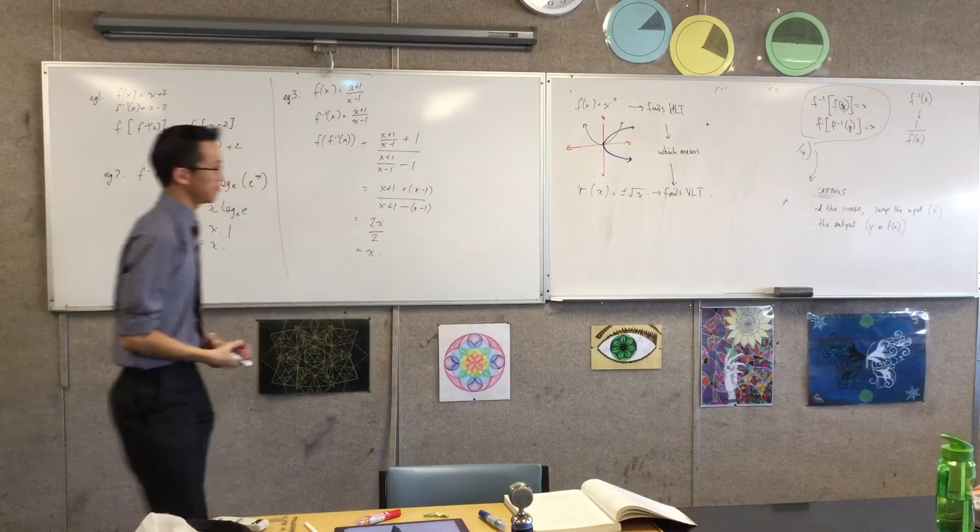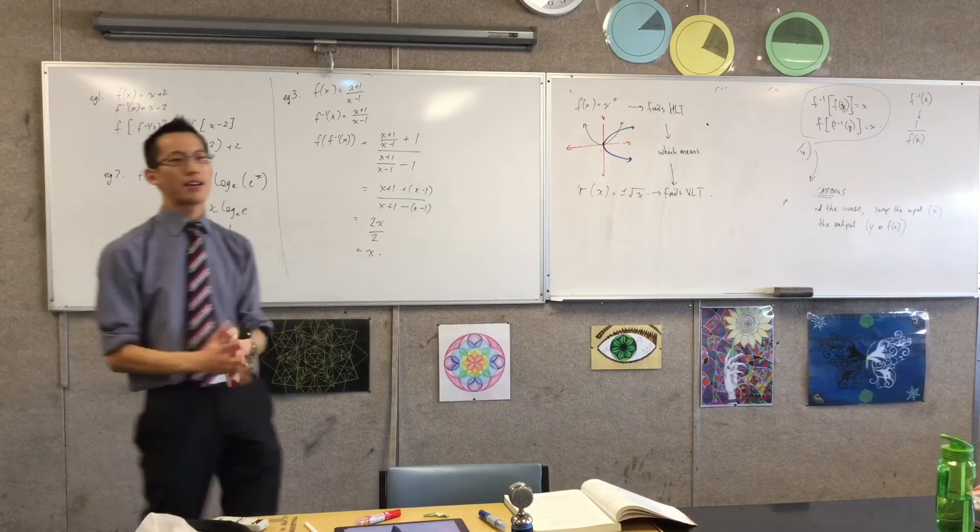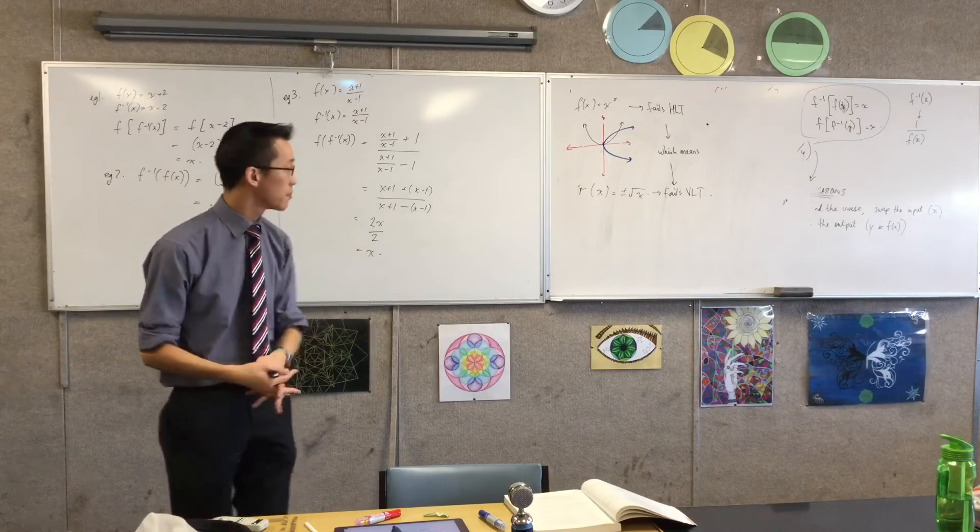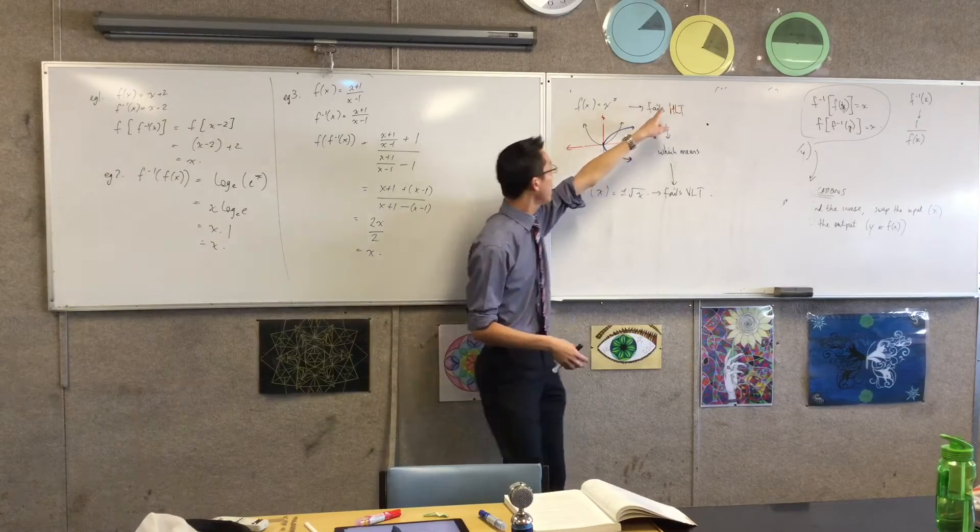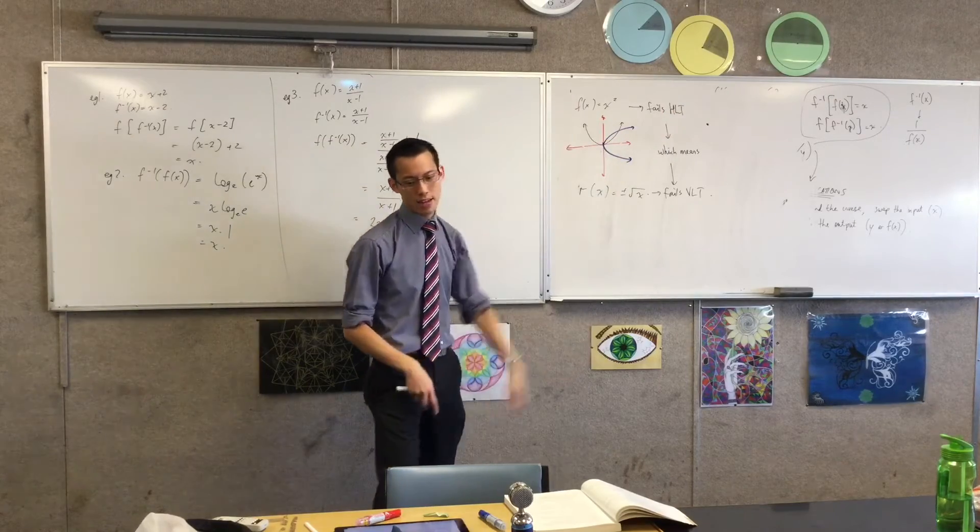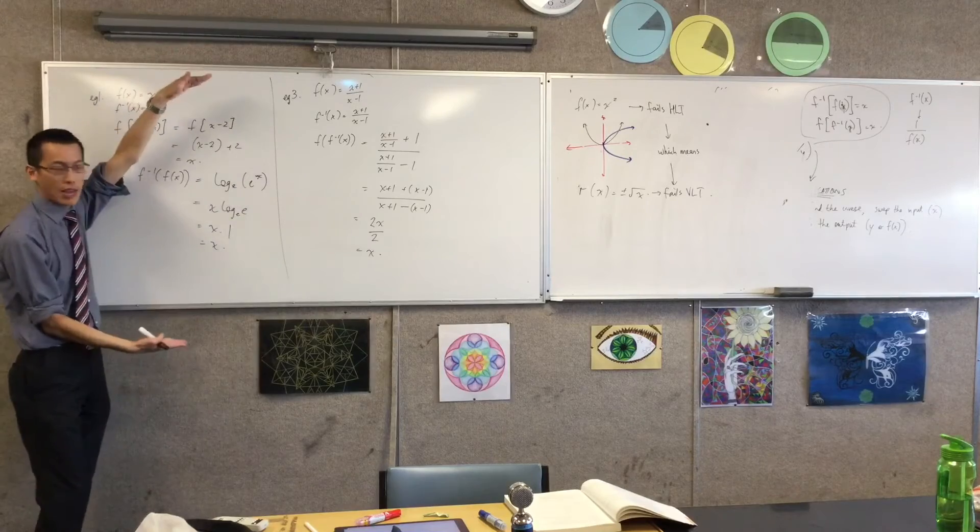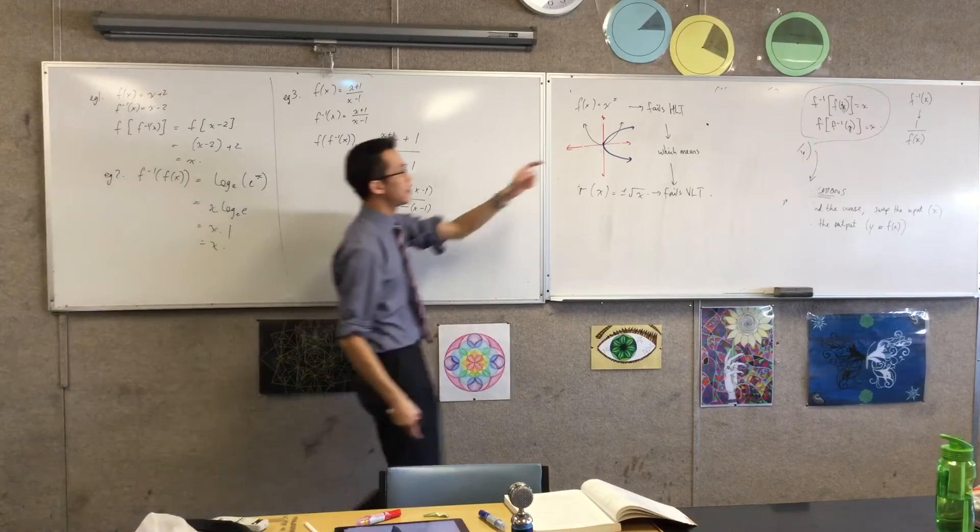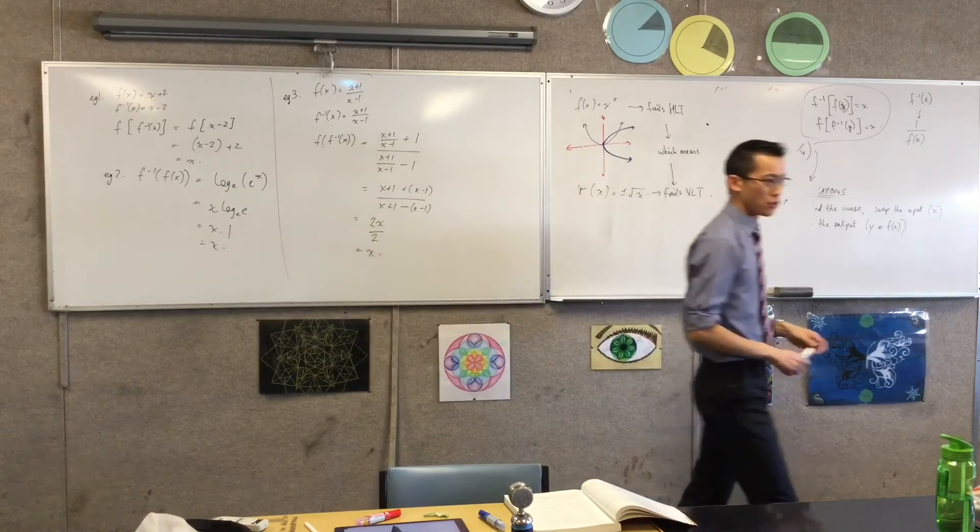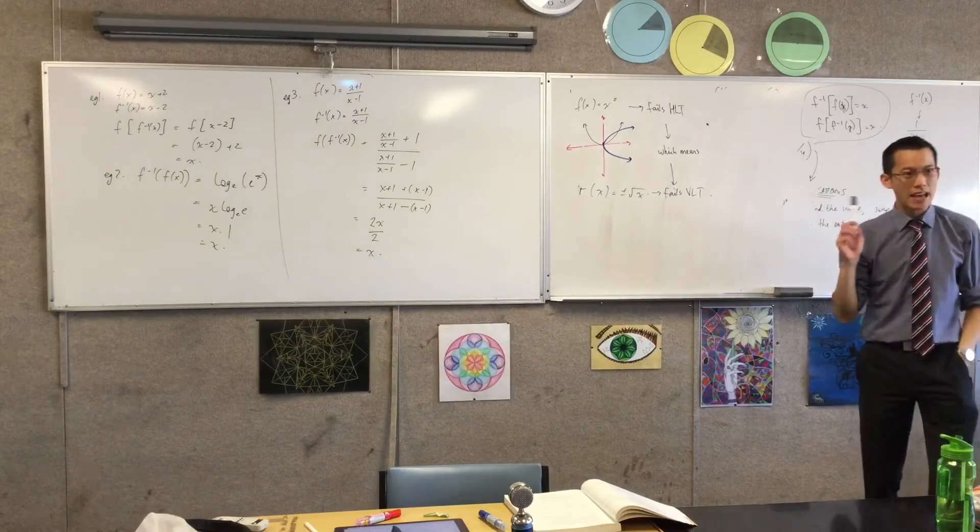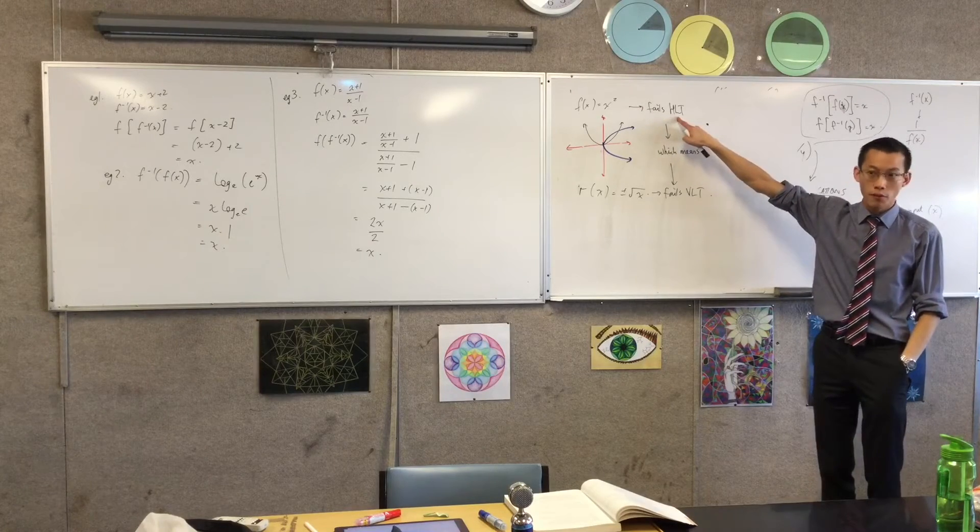So what we must do, and it's not that complicated really, is to say, well, I just want a part of this function such that it will pass the horizontal line test. Now, when you have a look at this, it's different with all those other functions I mentioned. Why is it that this function fails the horizontal line test, but none of the others do? This simple function has a particular feature that makes it break this rule. What feature is it?